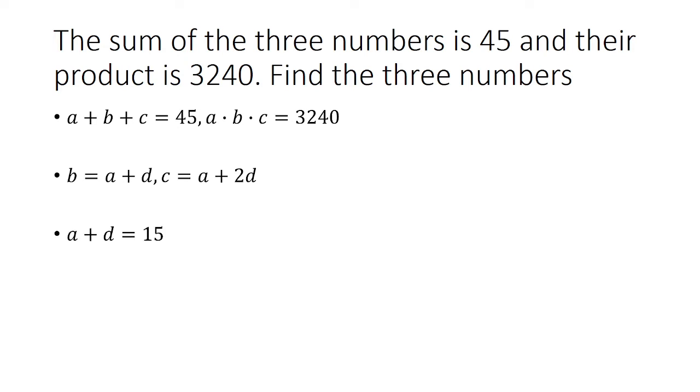So we just said that A plus D is 15. So now we're going to plug that into the product. So remember, the product is 3,240. So instead of B and C, we're going to have A plus D and A plus 2D. So we're going to write A plus 2D as just A plus D and then plus D, because I want to take advantage of A plus D being 15.